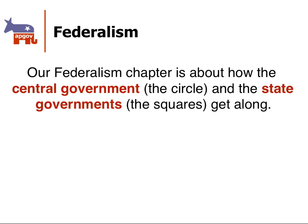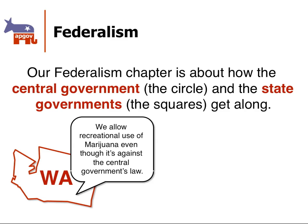In our book, when there are questions — multiple choice or FRQs — about federalism, they're typically going to be about how the central government and the state government get along, and there's often some conflict between them. For example, Washington recently allowed recreational use of marijuana, but the federal government says you're not supposed to have recreational use of marijuana. So between the circle and the square, there's some tension between the two of them.